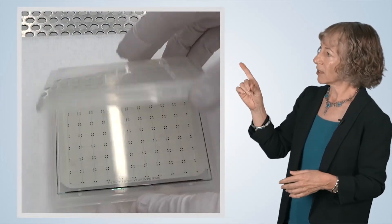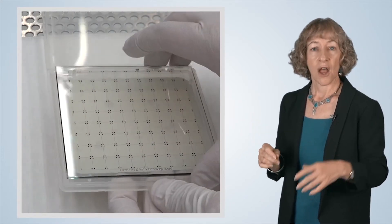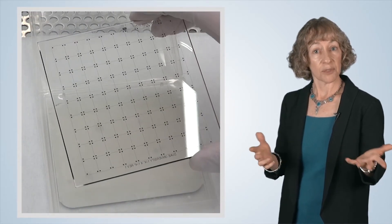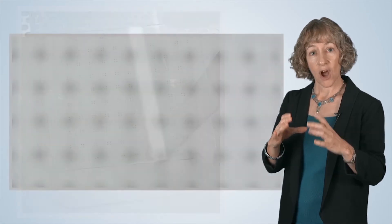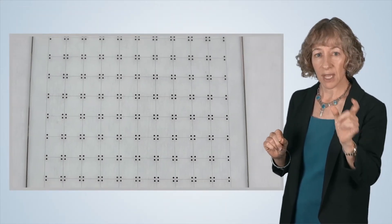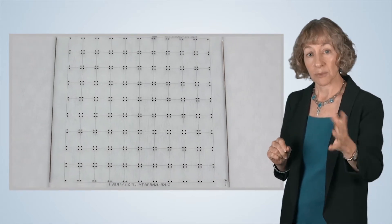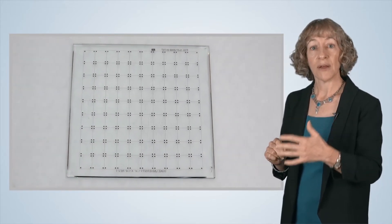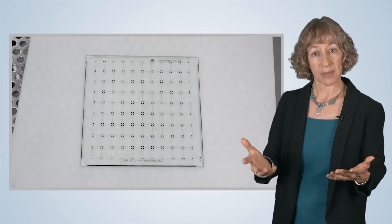Here's an example of a photomask. Photomask sizes vary depending upon the size of your substrate. On this photomask, we can see that the thin metal forms a very complex pattern. Some regions are transparent, while other regions have the metal film that make them opaque.